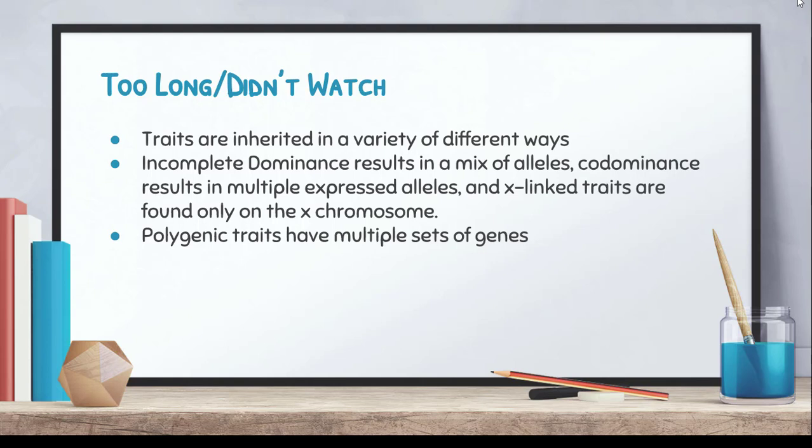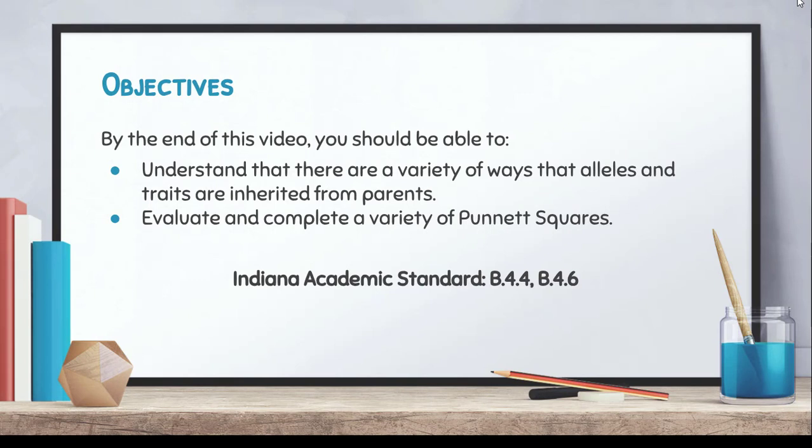Hopefully you now understand that traits are inherited in a variety of ways. Keep in mind: incomplete dominance is a mixture of alleles; co-dominance results in multiple expressed alleles; X-linked traits are only found on the X chromosome; and polygenic traits have multiple sets of genes. We'll talk next time in our video on pedigrees. Have a great day!